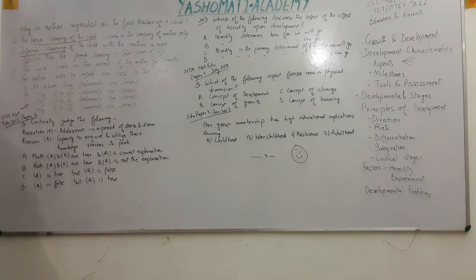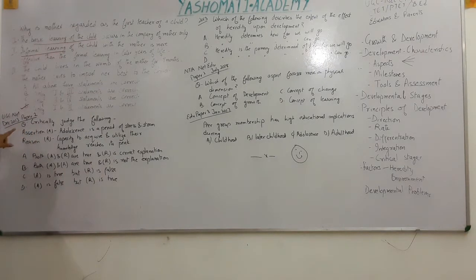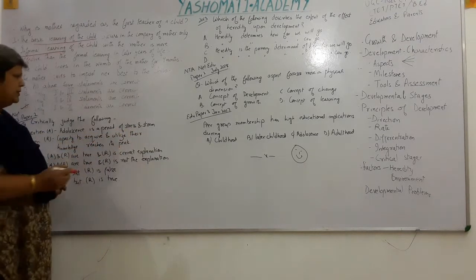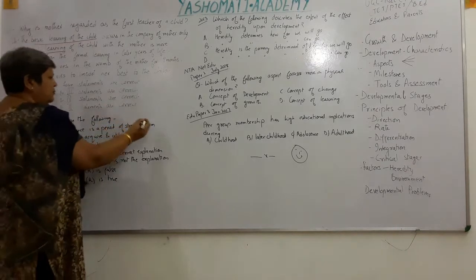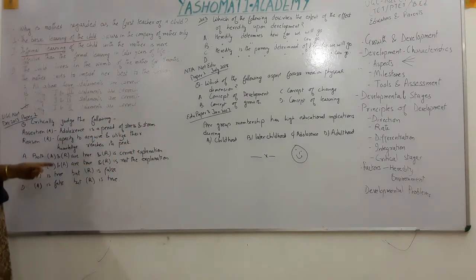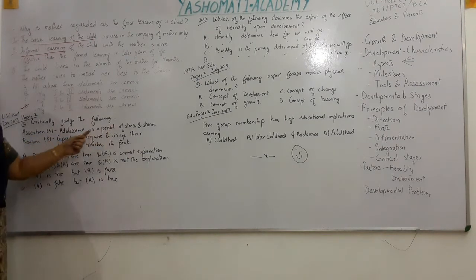Next question is from UGC NET December 2013 Paper 2 — an assertion and reasoning type question. Assertion: Adolescence is a period of stress and trauma. Reason: The capacity to acquire and utilize knowledge reaches its peak during adolescence.